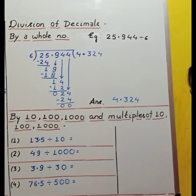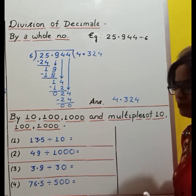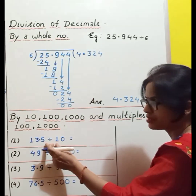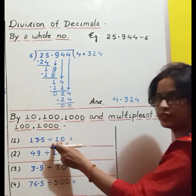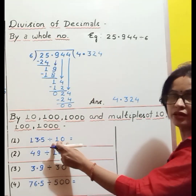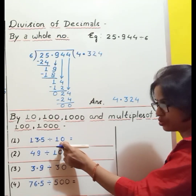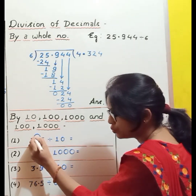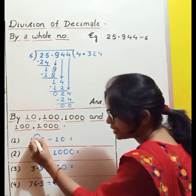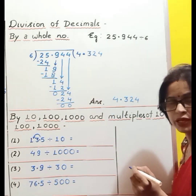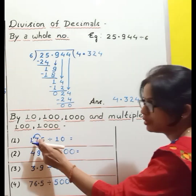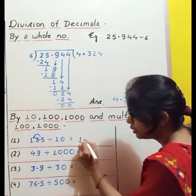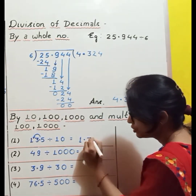See the example: 13.5 divided by 10. Here the divisor is 10, so the decimal will be shifted to the left-hand side by one place and it will come here. The answer will be 1.35.